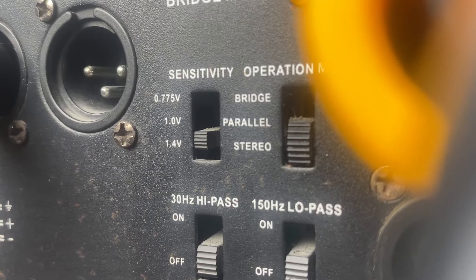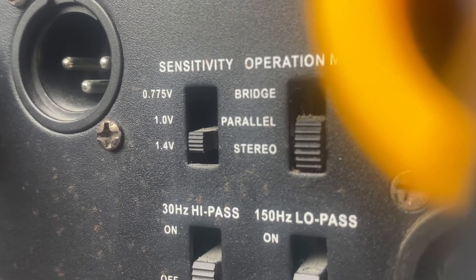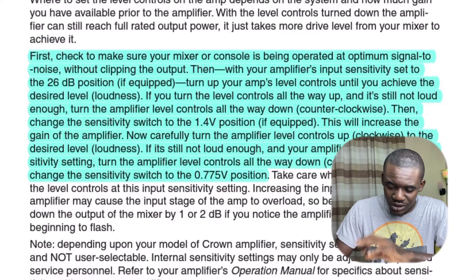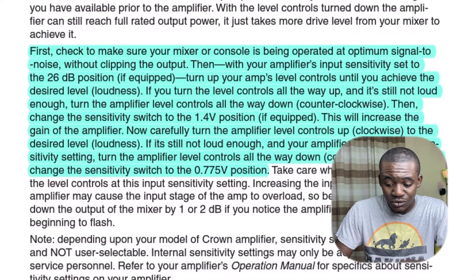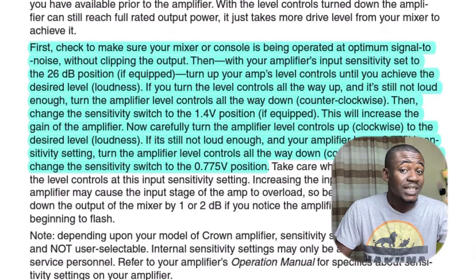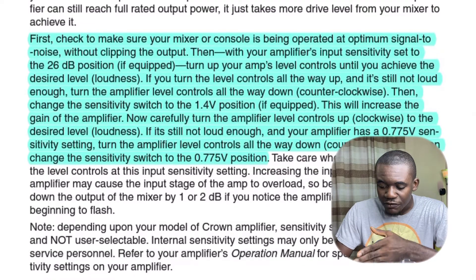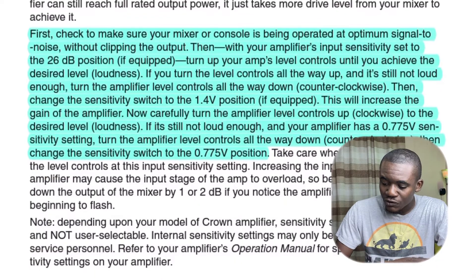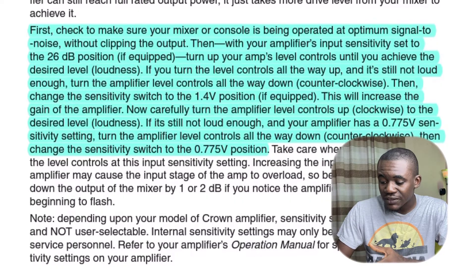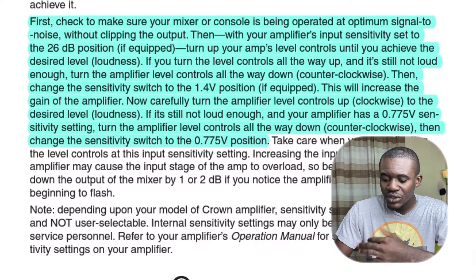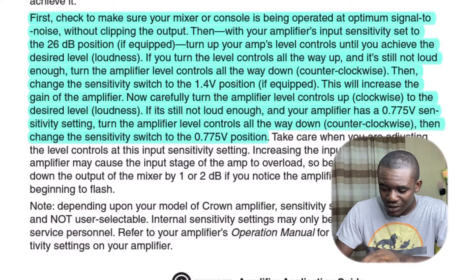The second thing we need to talk about is the amplifier sensitivity switch — for some amplifiers it may not be present at all; it's internal and not user adjustable. The Crown amplifier application guide explains: first, make sure your mixer or console is being operated at optimum signal-to-noise without clipping the output. Then, with your amplifier's input sensitivity set to the 26 dB position — if equipped, that's the least sensitive position — turn up the level controls until you achieve the desired loudness. If you turn the level controls all the way up and it's still not loud enough, turn the level controls all the way down, then change the sensitivity switch to the 1.4 volt position — that's the second least sensitive position — which will increase the gain of the amplifier.